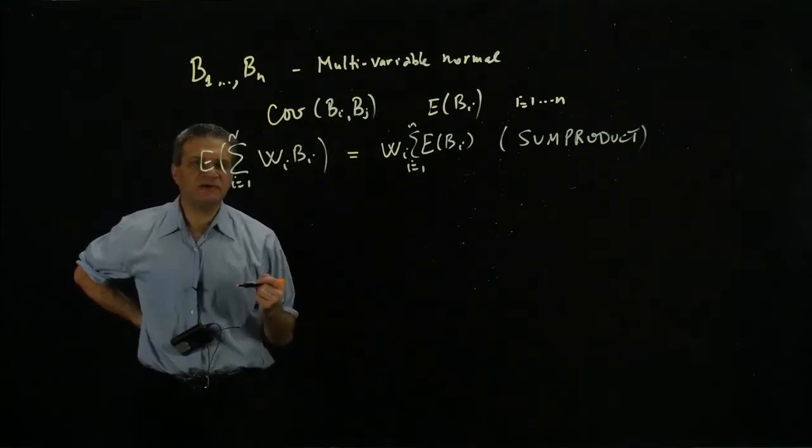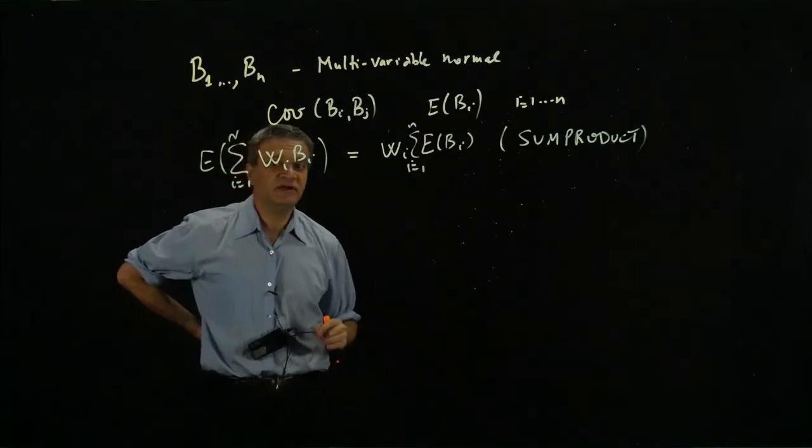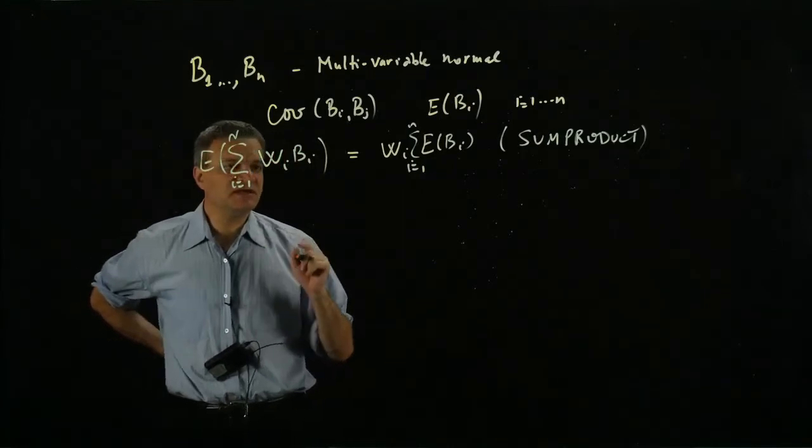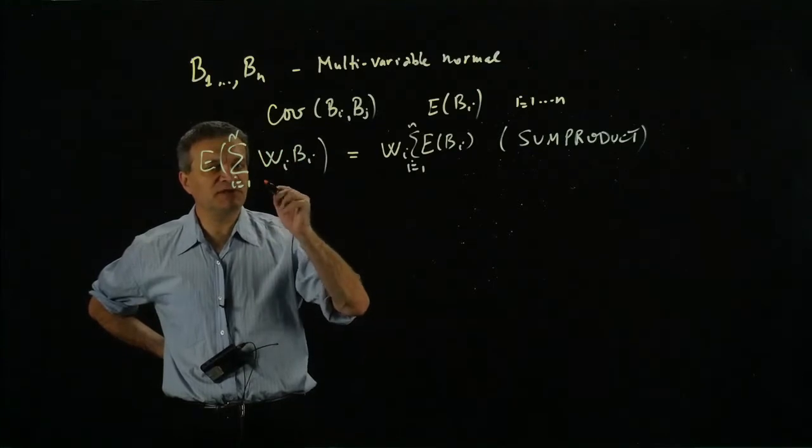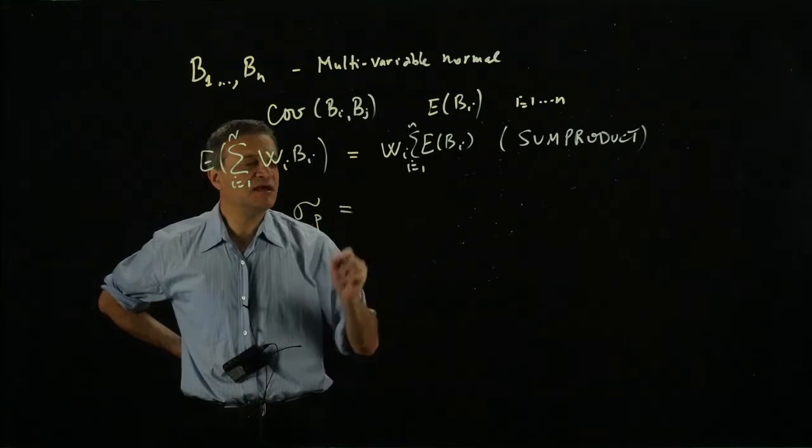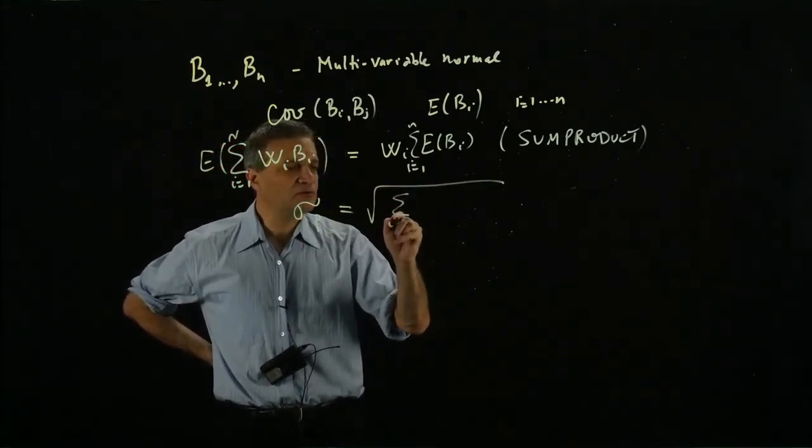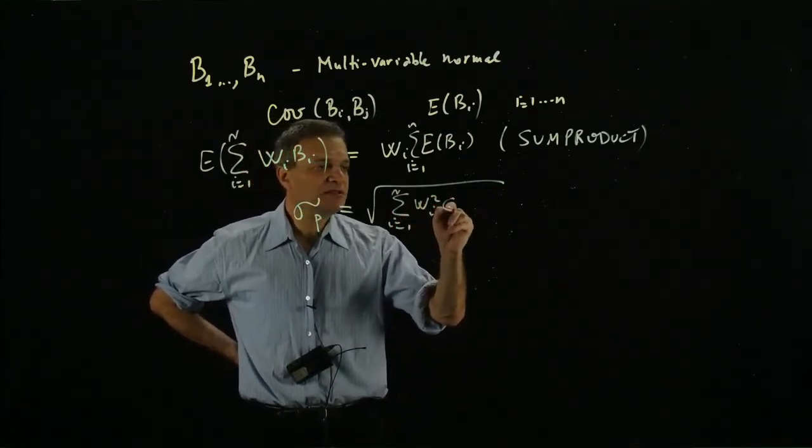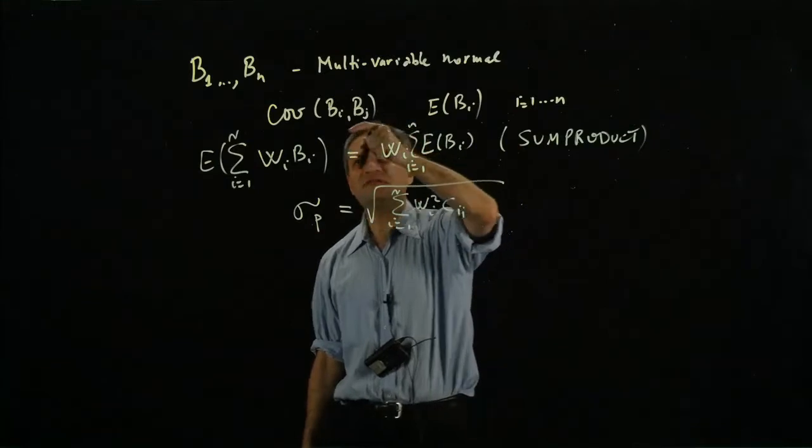What about the volatility? That's where it gets very interesting because volatility is actually equivalent to risk. The formula we did in class—σp equals the square root of the sum from i=1 to n of wi squared times cii, where these are the diagonal elements of the covariance matrix.